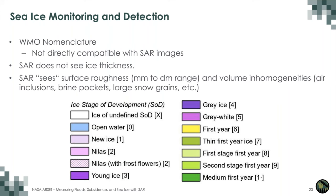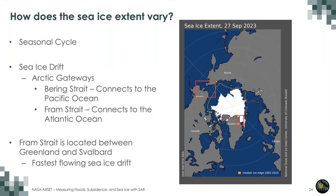The sea ice varies over the year and is not stationary — it drifts on top of the ocean. There are two main areas where Arctic ice exits: the Bering Strait and the Fram Strait between Greenland and Svalbard, where the fastest-flowing sea ice in the Arctic is found. This makes sea ice monitoring challenging, because two SAR images of the same location at different times may show very different ice. Sea ice extent can change both through melting and through drift.